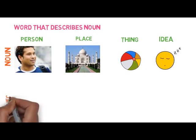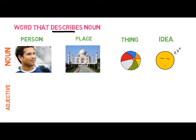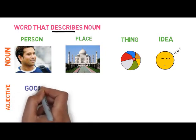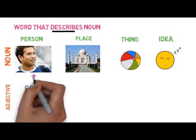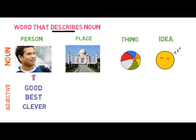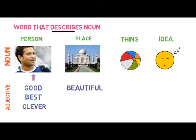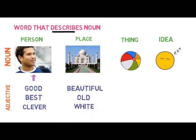An adjective usually comes right before a noun and names qualities of all kinds. For example, Rahim is a good person, he is the best tennis player, or Rahim is a clever person. Good, best, and clever are words that describe Rahim as a person. In case of Taj Mahal, how can you describe it? Words like beautiful, very old, and big are things that describe Taj Mahal as a place.